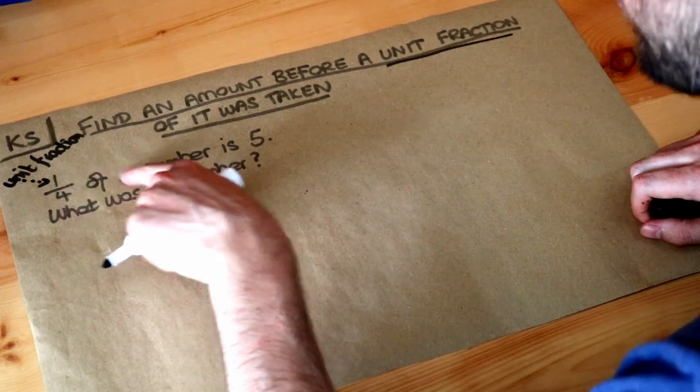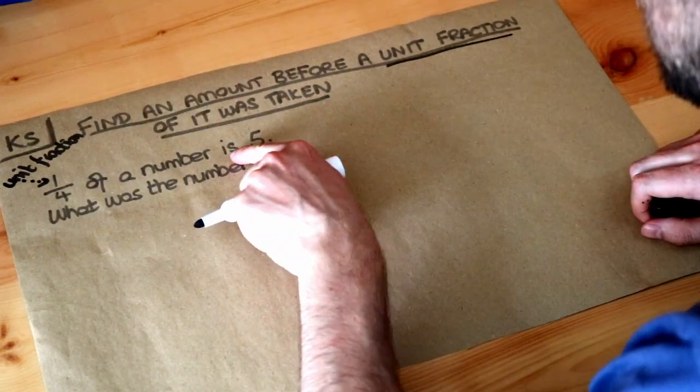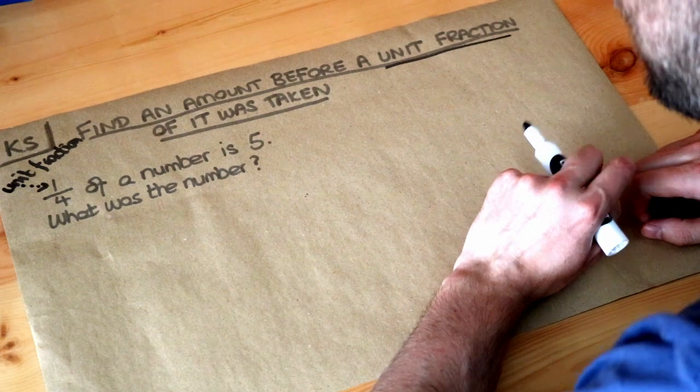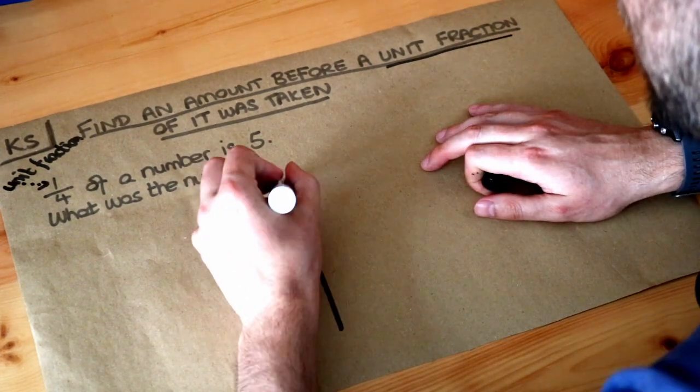So we're told a quarter of a number, we don't know what that number is, is 5 and we want to work out the original number. Now let's just try and visualize this on the left here.